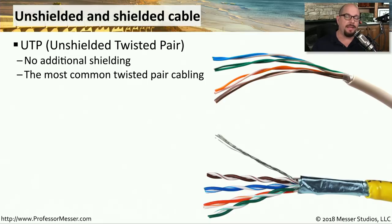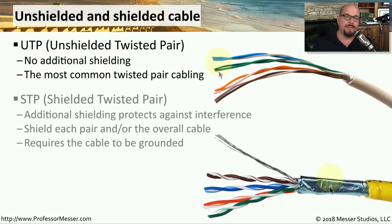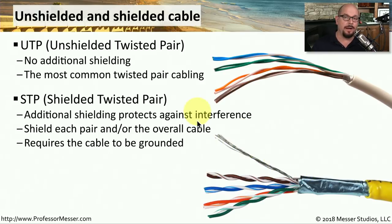If you stripped away the outer jacket of the ethernet cable on your computer, it would probably be UTP, or unshielded twisted pair — simply the outer PVC jacket and the cables inside with no additional shielding. If you work in a manufacturing environment or an environment with a lot of electrical equipment that might cause interference, you might want to use STP, or shielded twisted pair. In shielded twisted pair, there is a foil shield around all of those wires, and some STP even has a shield around the individual pairs themselves. Shielded twisted pair also has a grounding wire, which is another consideration when planning to install STP.